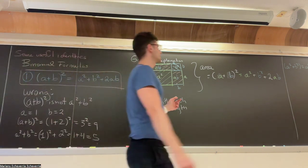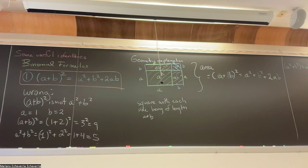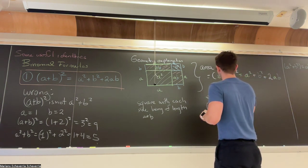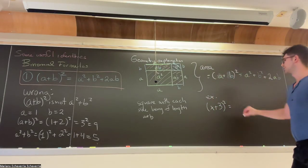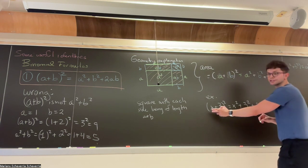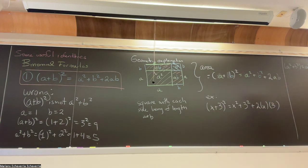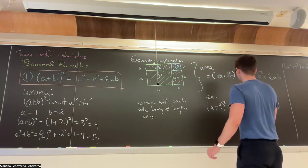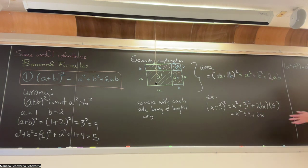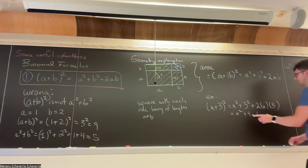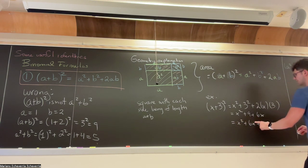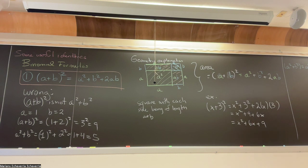So essentially the formula says: to square the sum, square each term and then add twice their product. In practice, the way we'll use this most often is when one number is something like x. For example, (x + 3) squared gives you x squared plus 9, plus two times three equals 6x, so you get x squared plus 6x plus 9.